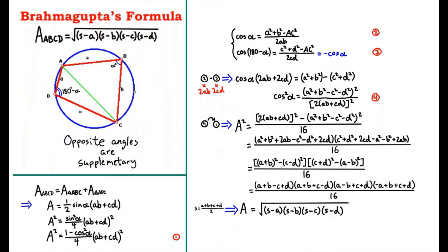Brahmagupta's formula: the area of a cyclic quadrilateral A, B, C, D is equal to the square root of (S minus A) times (S minus B) times (S minus C) times (S minus D), where S is equal to A plus B plus C plus D divided by 2.